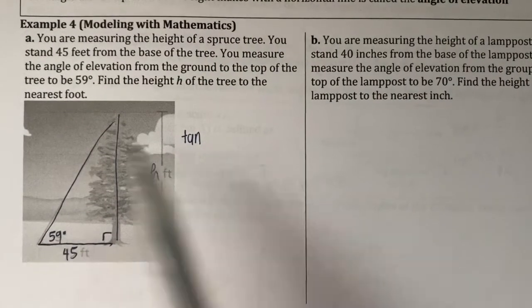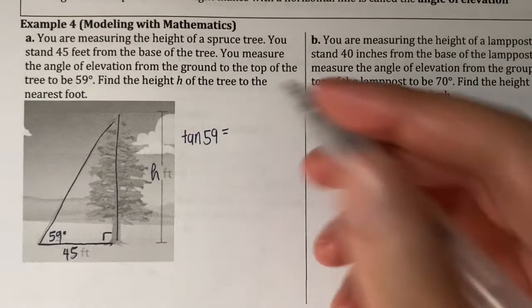Tangent of our angle of 59 is going to be equal to opposite, which is height over adjacent 45. Then we want to cross multiply. And then we are going to put 45 times tangent of 59 into our calculator to get 74.89. Oh, so this question wants it to the nearest foot, so we'll say about 75 feet.